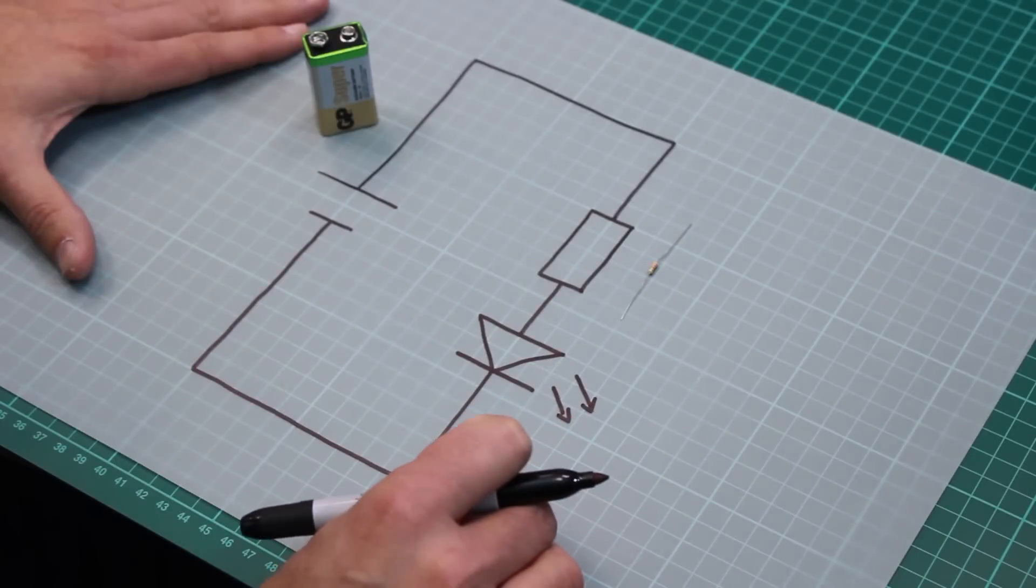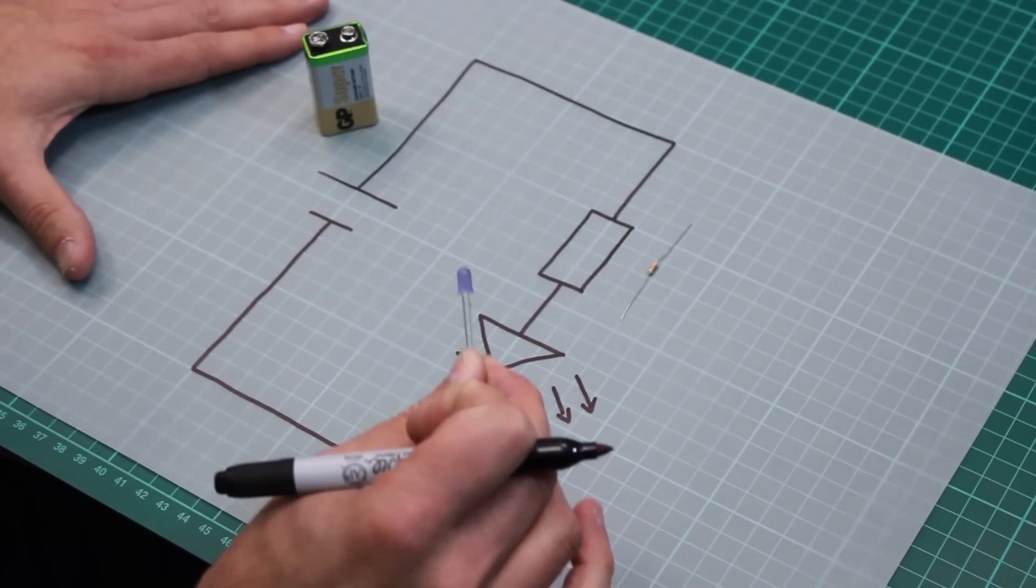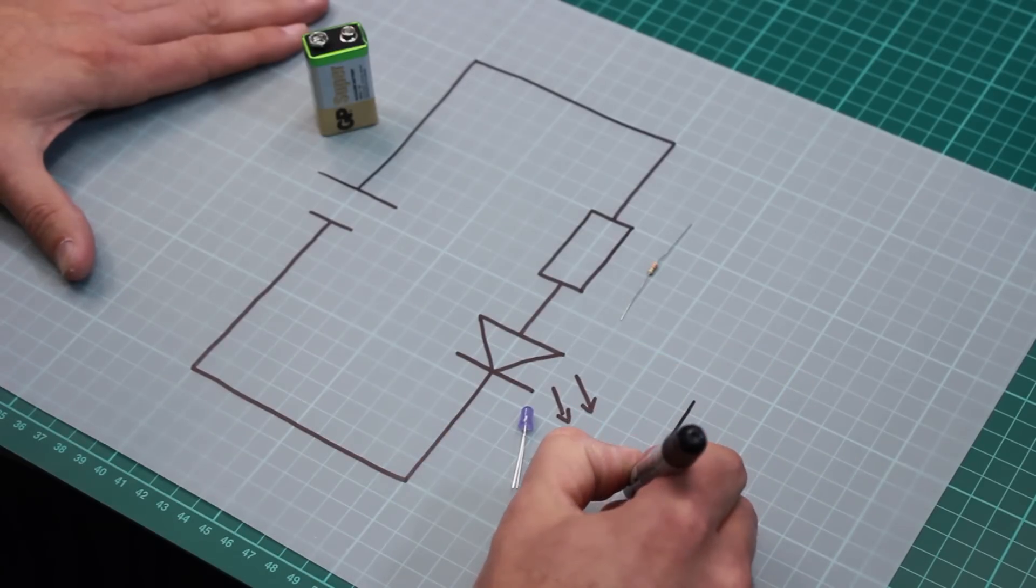I've looked at the data sheet for this LED and the voltage it requires, which is known as the forward voltage, is three volts. So across the LED we have three volts.